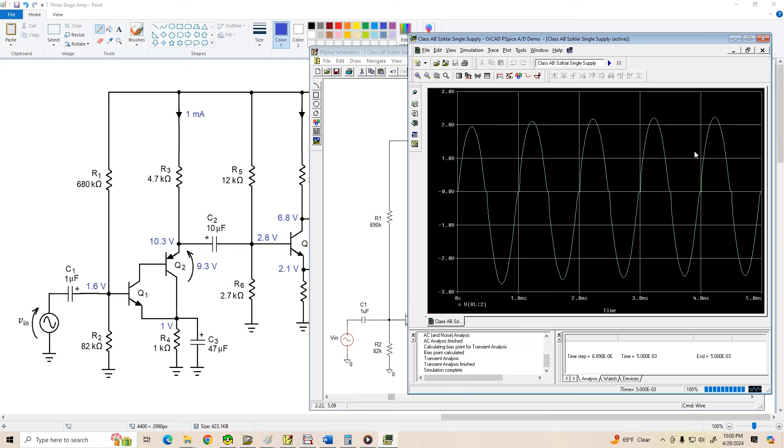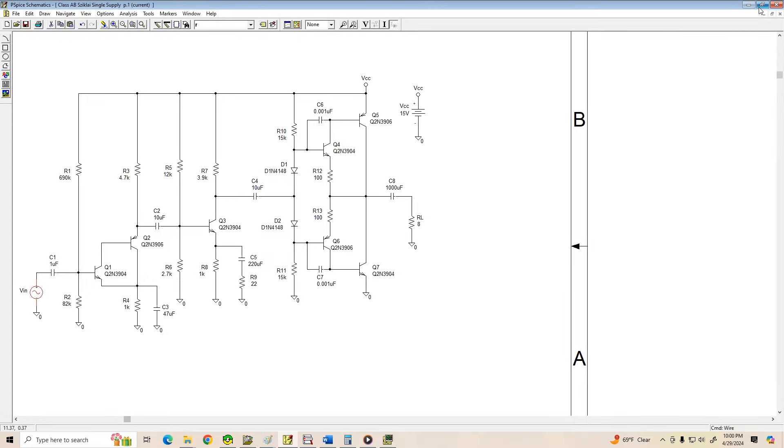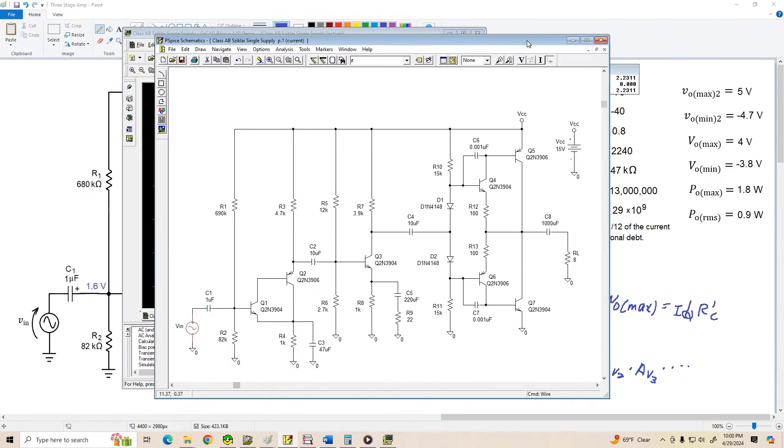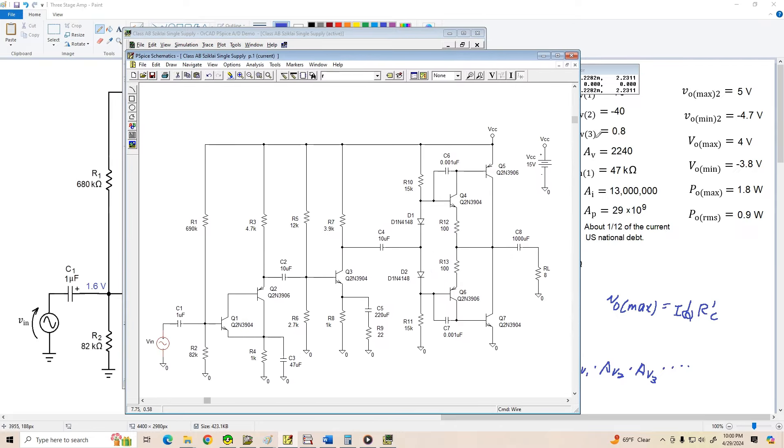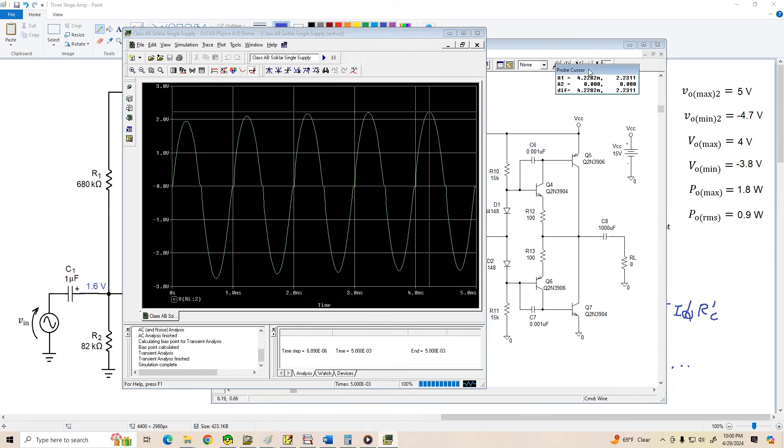We're going to do a transient analysis, and we want to look at the output voltage waveform. So we'll add VRL2. Here it is. So VRL2. Here we go. So once it settles down, it looks like we're getting an output voltage of about 2.23 volts peak. Considering that VIN is 1 millivolt, that means the gain of this amplifier is 2,231. And what did we predict for this? We predicted a gain of 2,240 right here. PSPICE is telling us it's actually 2,231. That's pretty good correlation with our theoretical values.